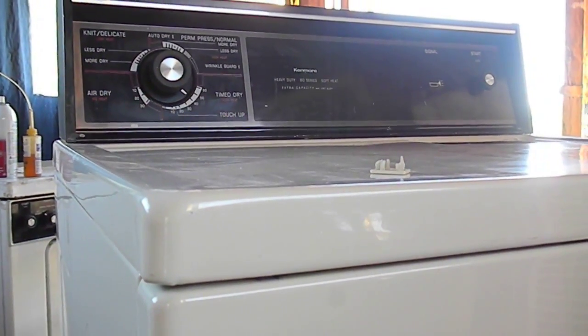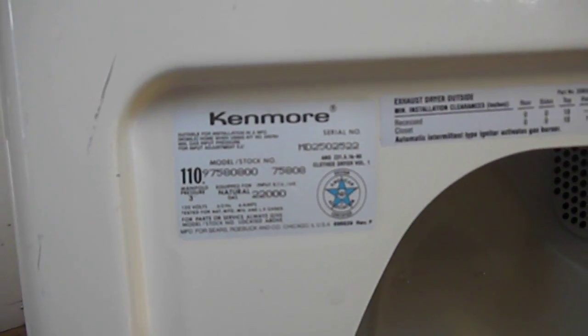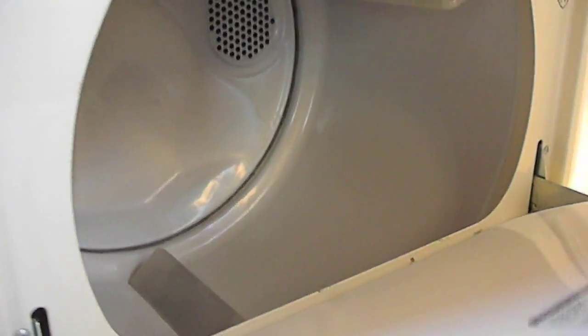Okay, here we have your classic Kenmore dryer, model number 97580800. It's got a nice wide mouth and it looks pretty clear back in there. Sometimes these things get plugged up with lint, but that looks okay. There's a little air gap there that could possibly be tightened up.